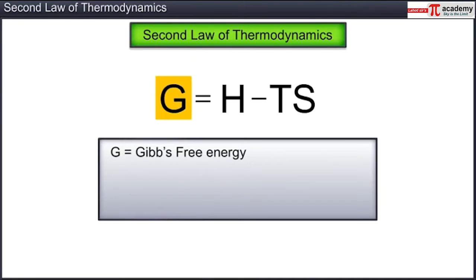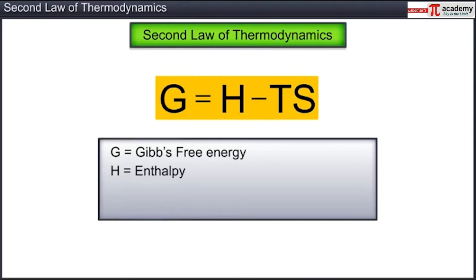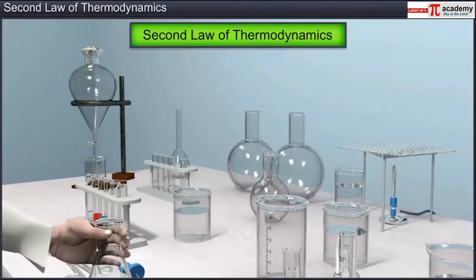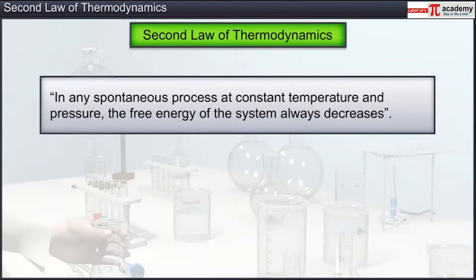For any particular system, Gibbs free energy is defined as G = H − TS, where H is enthalpy, T is absolute temperature, and S is entropy. In terms of the Gibbs free energy, the second law of thermodynamics can be restated as: in any spontaneous process at constant temperature and pressure, the free energy of the system always decreases.